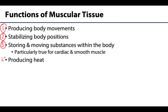Lastly and importantly, a fourth function of muscular tissue is that contracting muscle produces heat — a process called thermogenesis. You have likely experienced this through shivering, which is the involuntary contraction of skeletal muscle. Shivering will dramatically increase the rate of heat production. Those are the four main functions of muscle, going along with the four main properties — four plus four equals the functions and properties of muscle.